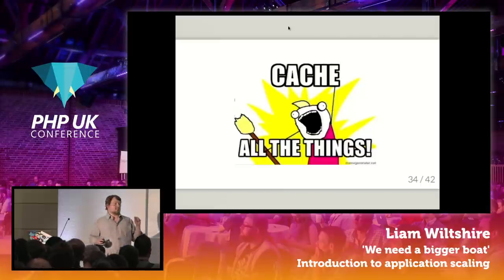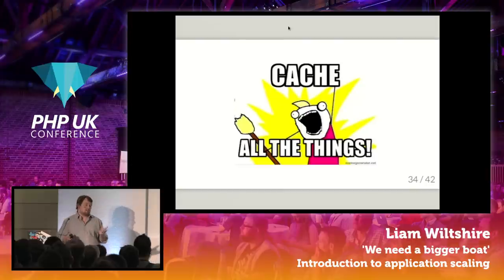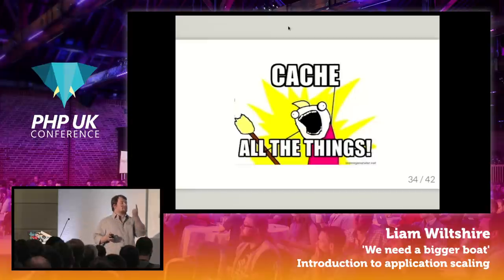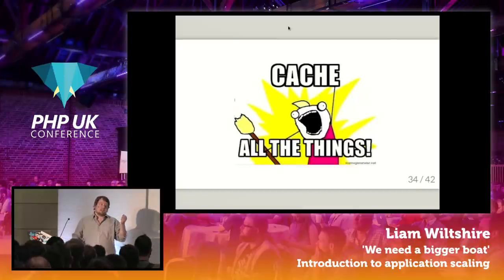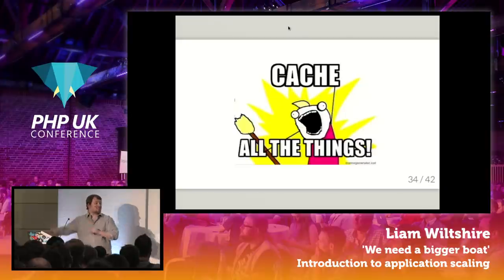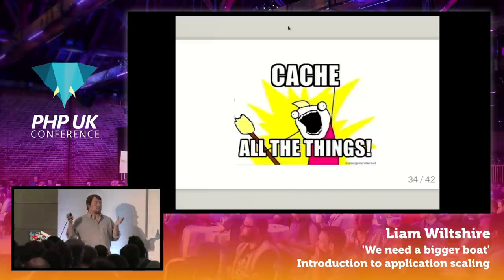Cache all the things — okay, that's a slight exaggeration. You don't want to cache everything, it's a case of working out what makes sense to cache. If something is only generated once every 24 hours and only looked at once every 24 hours, you probably don't need to cache it. But if you've got something that might change every minute but in that minute it's being requested 60 times, then generate it once, cache it for a minute, and generate it again the next minute. How you do your cache is entirely up to you — we use Redis, people use Memcache. Just writing stuff to a text file is better than having no cache at all. Some cache is better than no cache.